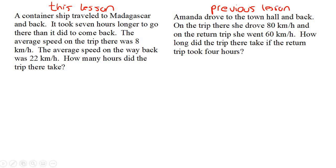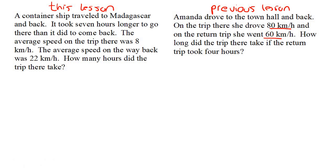What you're going to notice is that in this one, they make it pretty straightforward. They tell you that Amanda drove to the town and back. On the trip there, she drove 80 kilometers; on the trip back, she went 60. See how easy that was? They tell you everything about the trip there and the trip back. Then they also tell you that the trip there took four hours, so it's pretty straightforward.